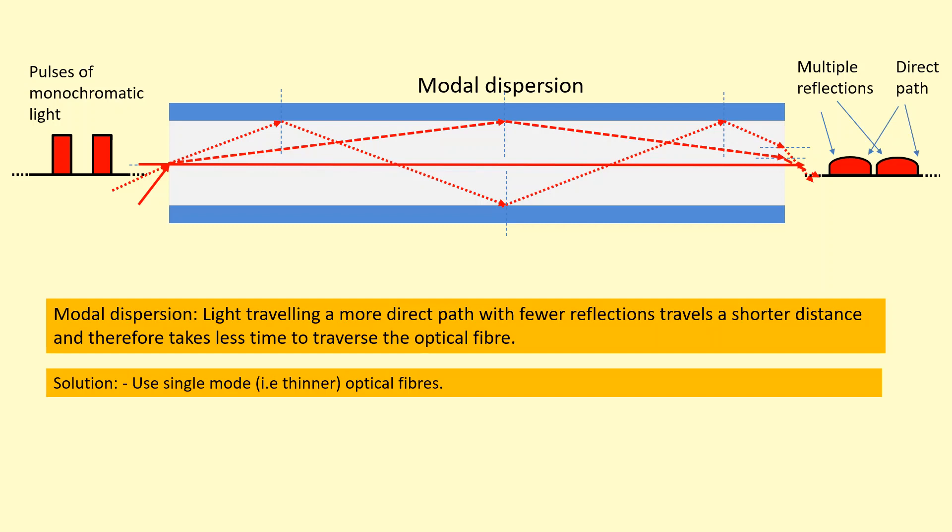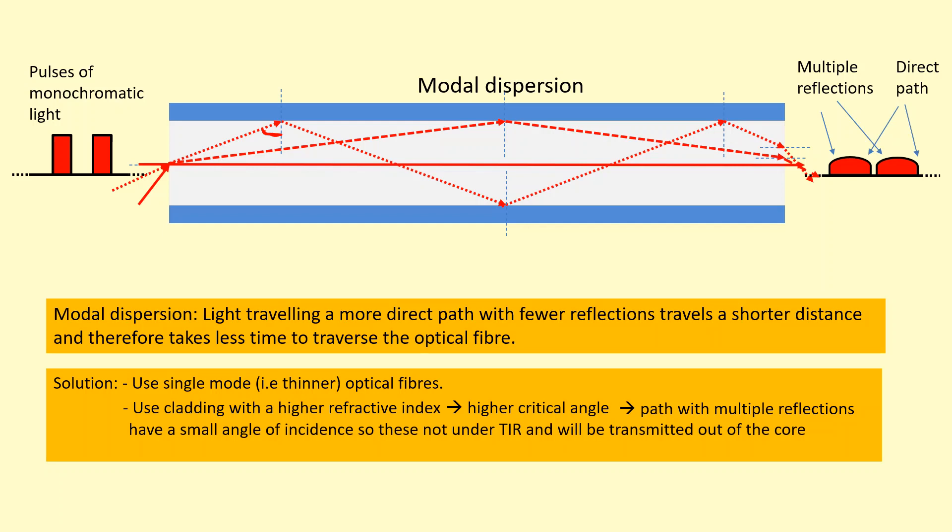And one solution to this is to use something called single mode fibers, which limit the number of possible ways in which the light can travel down the optical fiber. The second way to reduce modal dispersion is to use cladding with slightly higher refractive index. Now, the refractive index of the cladding is still lower than that of the core. Because if it wasn't, total internal reflection wouldn't occur. However, if the difference in the refractive indexes is smaller, then the critical angle actually gets larger. And if you look at the paths that have multiple reflections, the angle at which they are incident, this angle here, is actually pretty small. And if the angle is smaller than the critical angle, it won't actually do total internal reflection. Instead, it will be transmitted into the cladding. So what this does is this eliminates paths that have multiple reflections. So only more direct paths are transmitted through the optical fiber. And this reduces the pulse broadening.